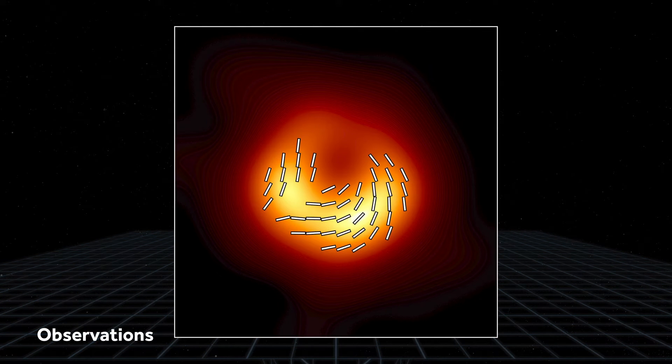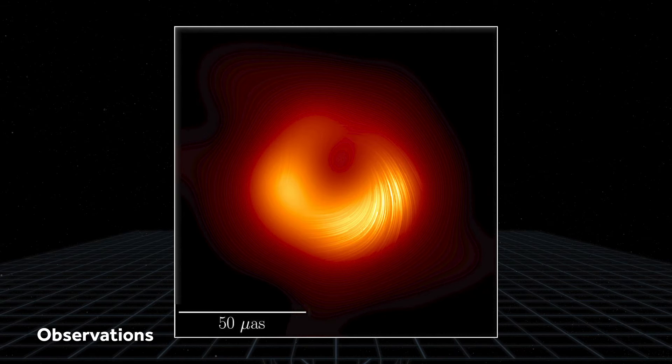By analyzing these tick marks, we can learn about the geometry and strength of the mysterious magnetic fields that surround black holes.